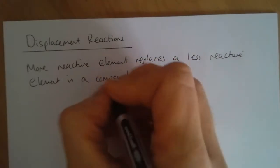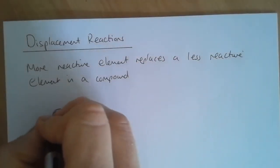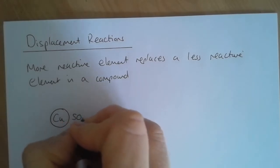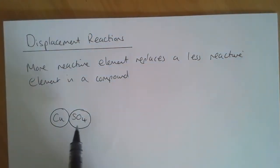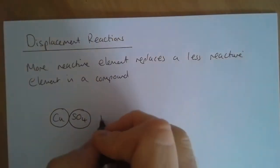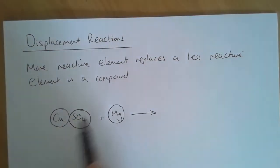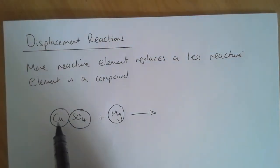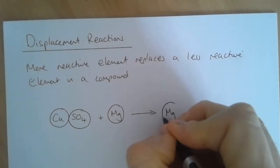Much easier if we actually have a look at an example. We're going to have a look at the reaction between copper sulfate and magnesium. Copper sulfate is made up of two ions: a copper ion and a sulfate ion. Now magnesium is a much more reactive metal than copper, so magnesium replaces copper to give us magnesium sulfate.